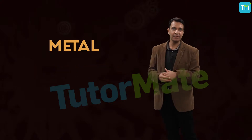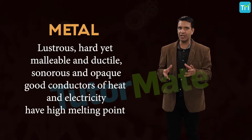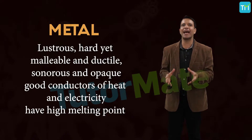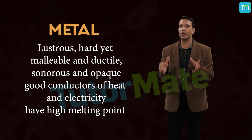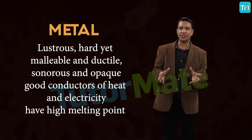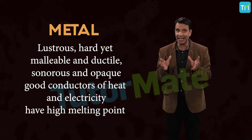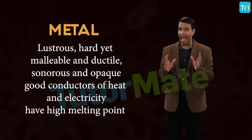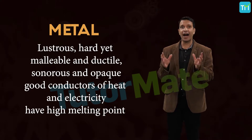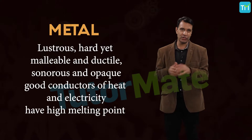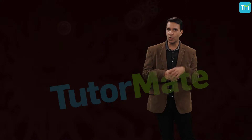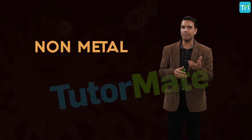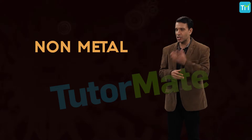So what is a metal? Metals are lustrous, hard yet malleable and ductile, sonorous, and opaque elements that are good conductors of heat and electricity and have high melting points.